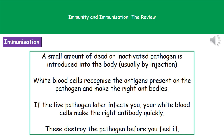As a result of recognizing the antigens, the white blood cells make the right antibodies. That means we have those antibodies and the ability to make them quickly. So if the live pathogen infects us at a later stage, our white blood cells are already primed and ready to make that right antibody quickly, destroying the pathogen before we start to feel ill. That's why vaccinations or immunizations protect us from certain illnesses.